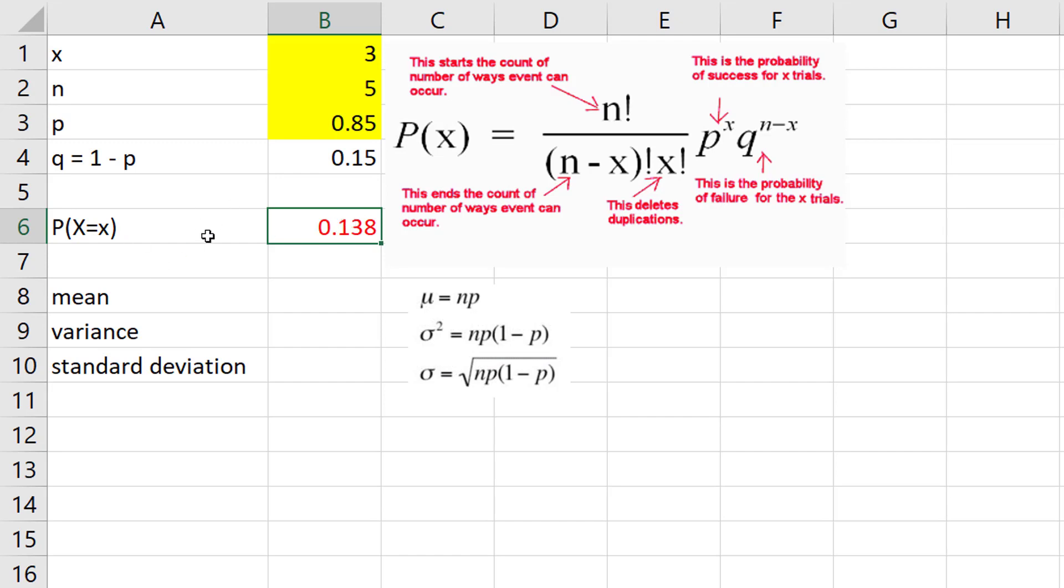With my binomial distribution based on these values, the probability that I would get three successes with, let's say again, my light bulbs is 0.138 or about 13.8 percent.